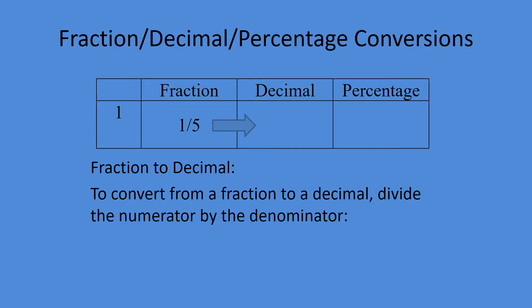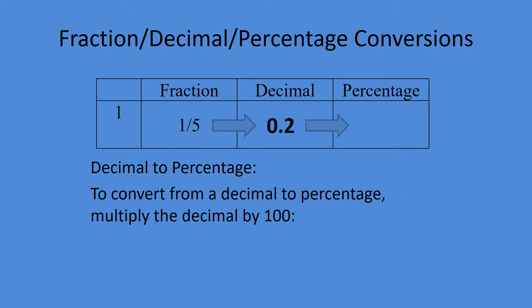Let's go ahead and convert amongst those three forms. Going from fraction to decimal, all you have to do is divide the numerator by the denominator. Take one divided by five and you should end up with 0.2. To go from decimal to percentage, multiply by 100. Take 0.2, multiply by 100, and you'll get 20%.